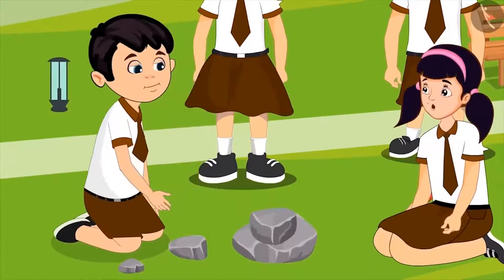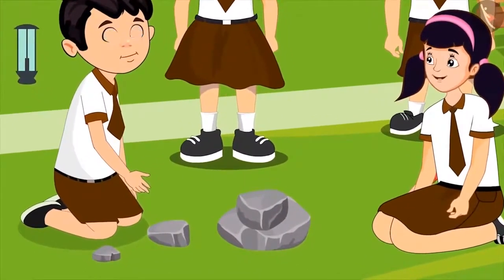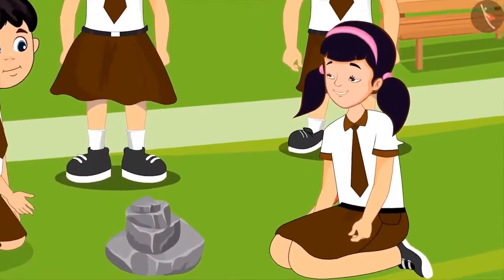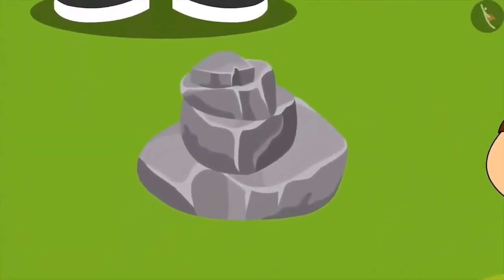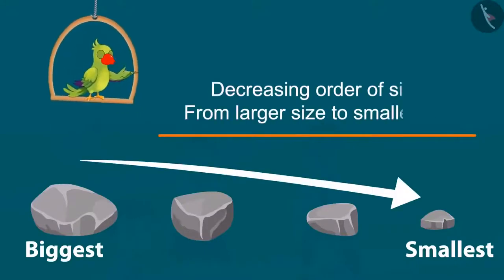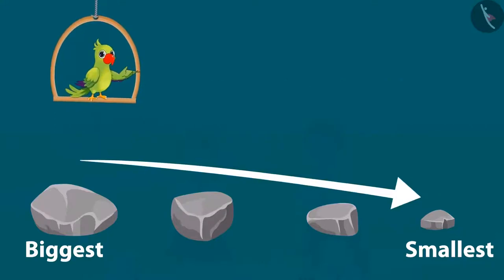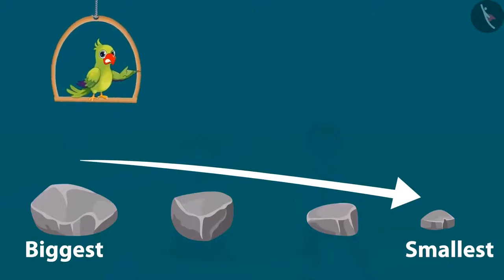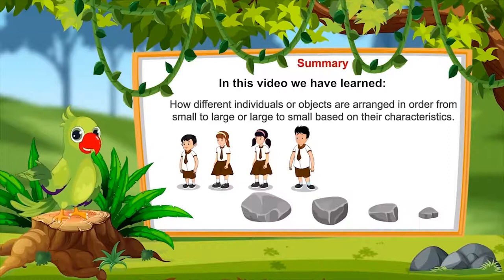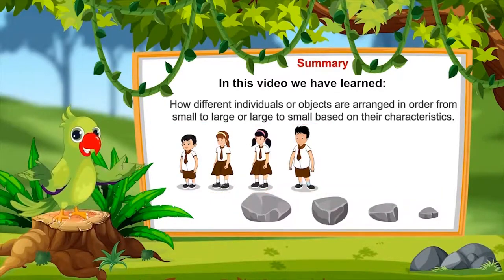They continue adding stones in decreasing order of size until the stone pile is complete. Children, in this example you saw how Chotu and Aarti made a pile of stones by keeping them in the decreasing order of their size, one by one, from large to small. So children, did you enjoy seeing examples of seriation? That's all for today. In this video we learnt how to organize different people or objects in order from small to large or from large to small. I hope you understood this topic properly. Bye friends!